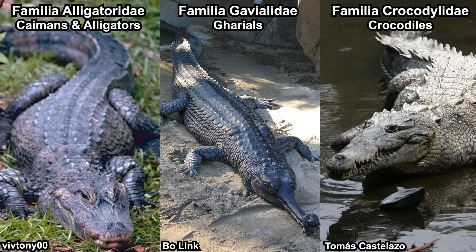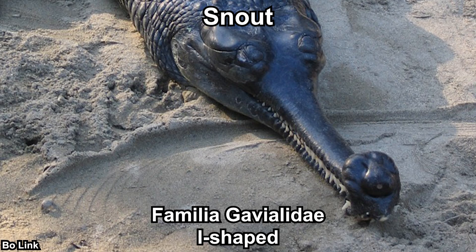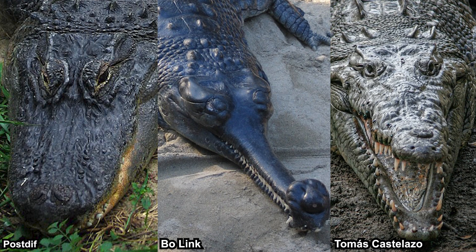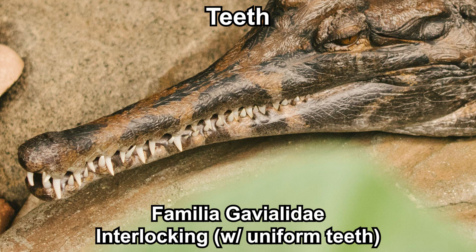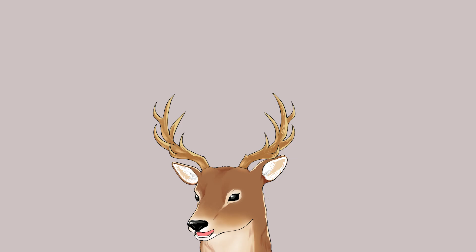Identifying each family is actually quite simple, though many people are still unable to do so. The obvious key is the snout: Alligatoridae have a U-shaped snout, Gavialidae have an I-shaped snout, and Crocodylidae have a V-shaped snout. Comparing them side by side makes it obvious. For teeth: Alligatoridae have a complete overbite with lower teeth on the inner side; Gavialidae have interlocking, relatively uniform teeth; Crocodylidae also have interlocking teeth but with varying sizes — most apparent is their lower fourth tooth fitting into a notch on each side of the upper jaw.